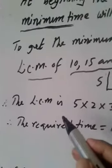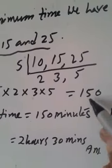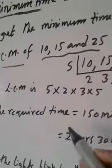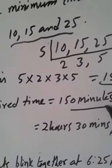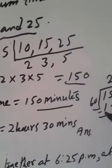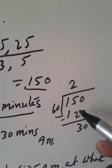The LCM of 10, 15, 25 is 150. It means the required time is 150 minutes. We have to convert it into hours divided by 60.